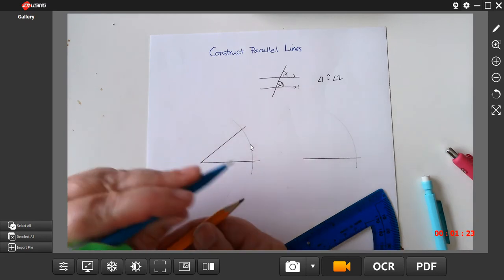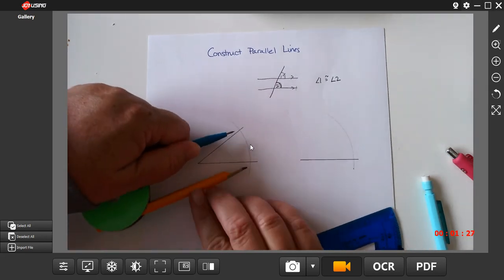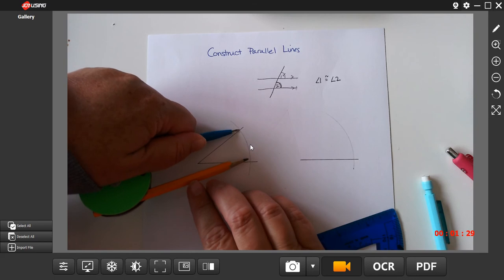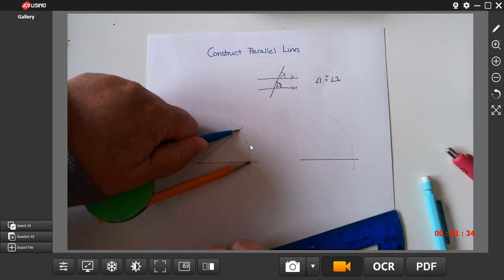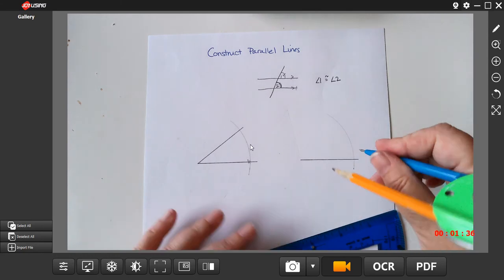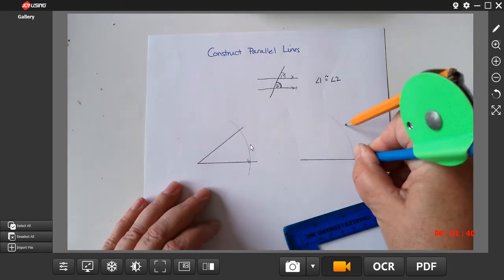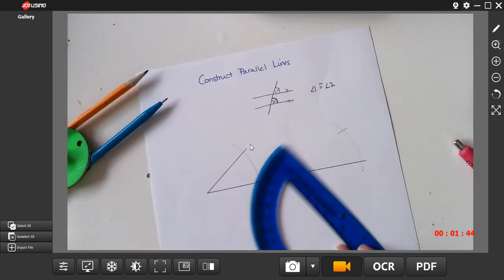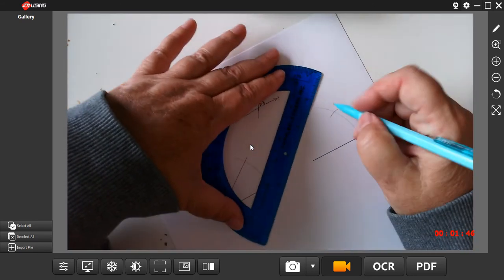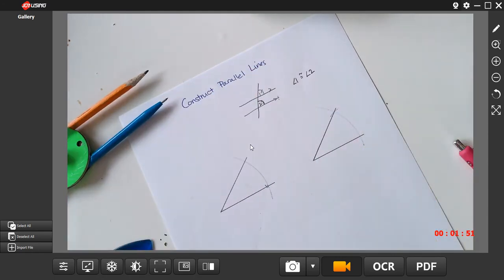Now, I need to measure from point of intersection to point of intersection. Okay, and I'm going to duplicate that here. And there's my copied angle.